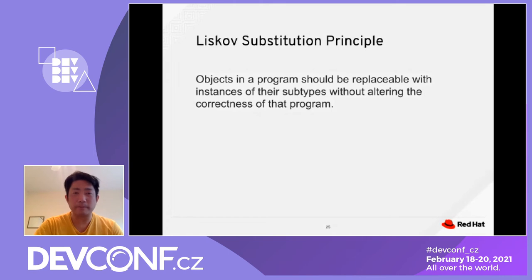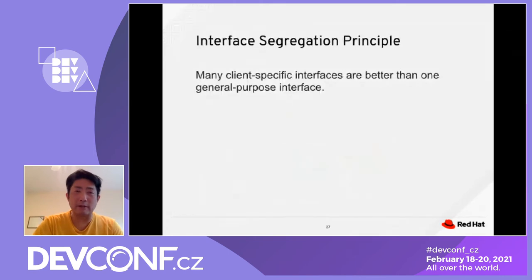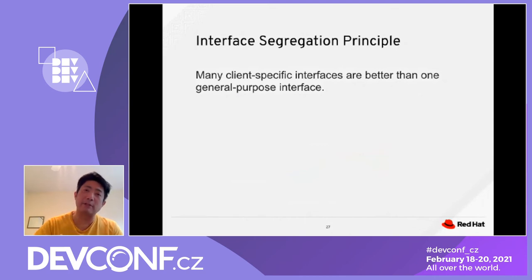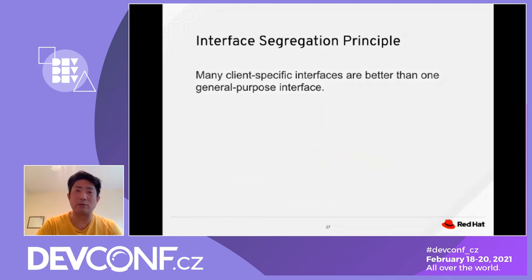Interface Segregation Principle: a lot of the time we deal with many different interfaces, especially with legacy code. The interface may return tens or hundreds of different data fields — many of which we don't need at all. When you develop your application, remember to always create client-specific interfaces. You could have a client-specific interface on top of a legacy interface that will only return the data you need. The benefit is that your data model will be smaller, your code performance will be faster, and you reduce the size of your code — ultimately improving quality.